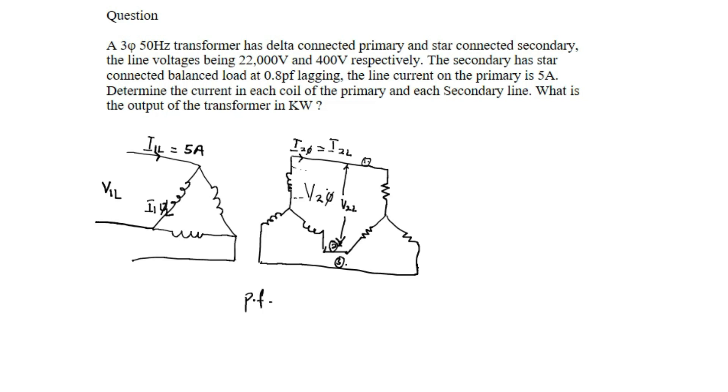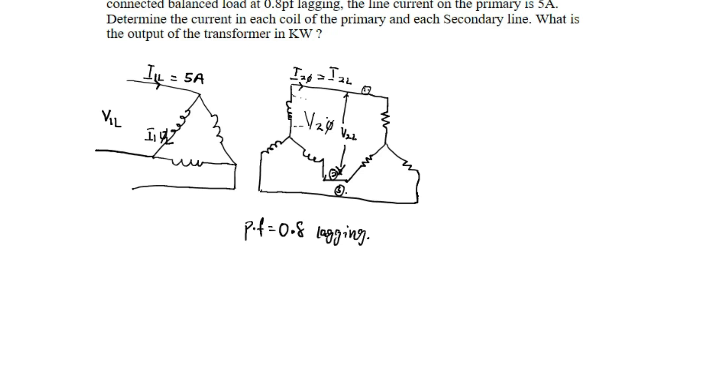We are given the power factor of 0.8 lagging. Let's keep in mind the following relations: line voltages are given by phase voltages multiplied by √3, that is for star connection.